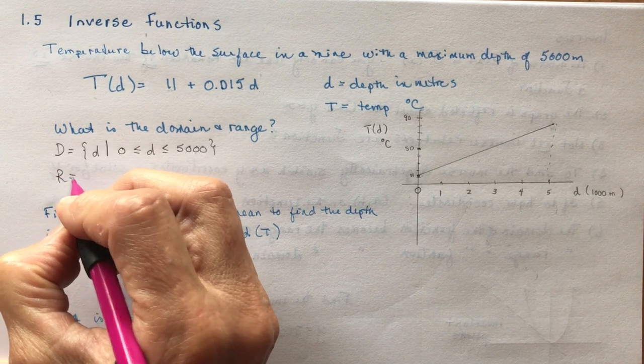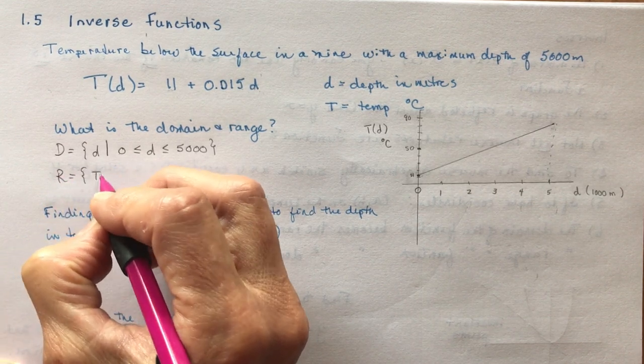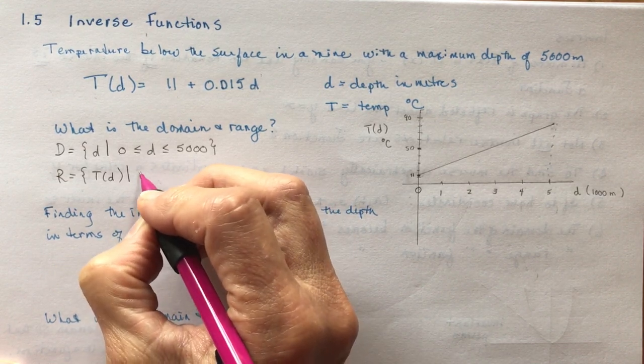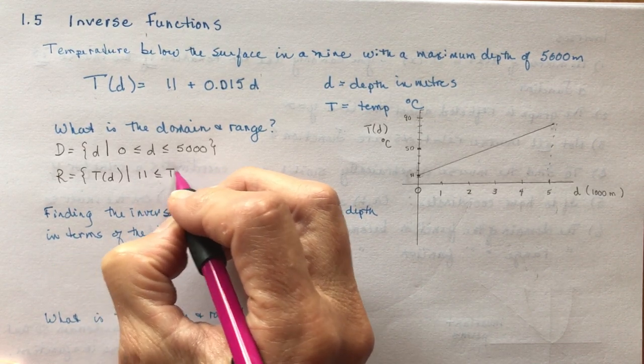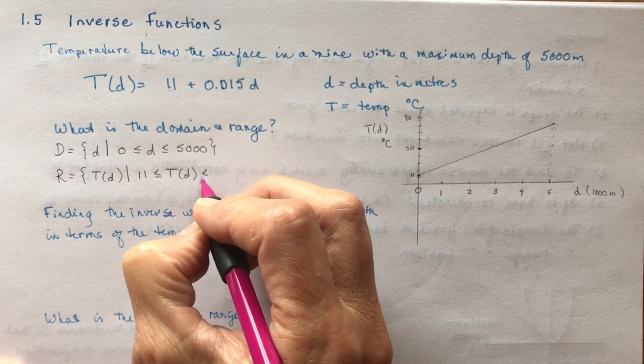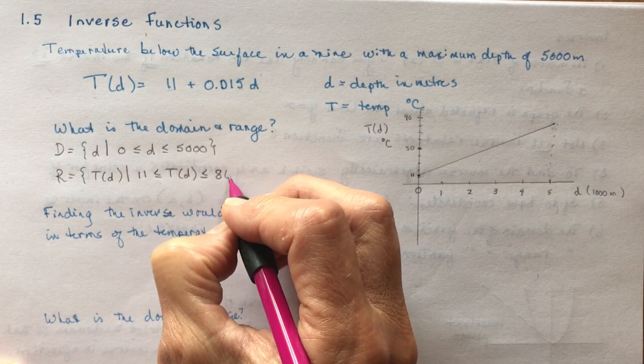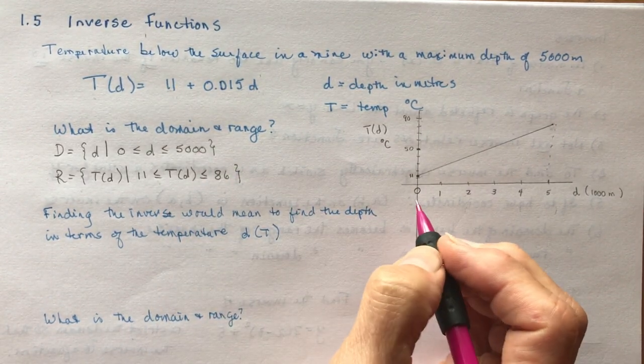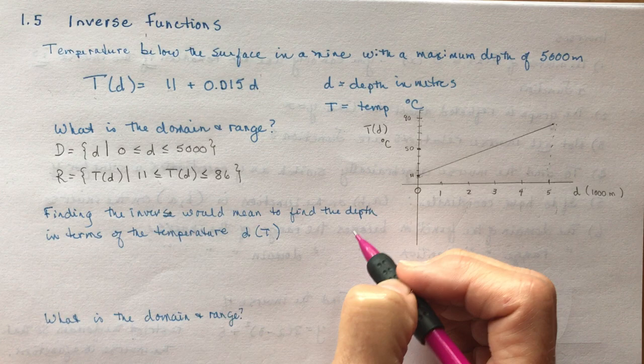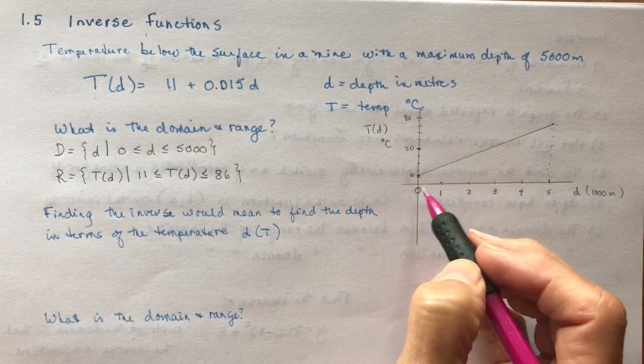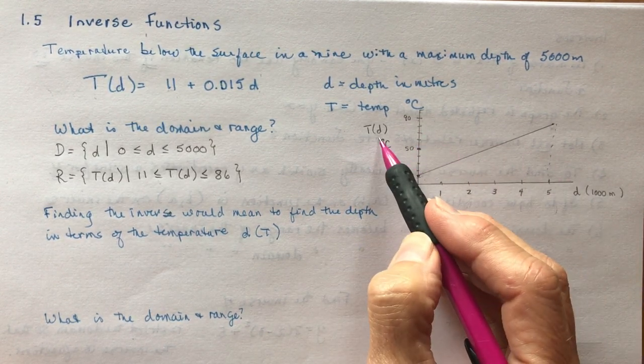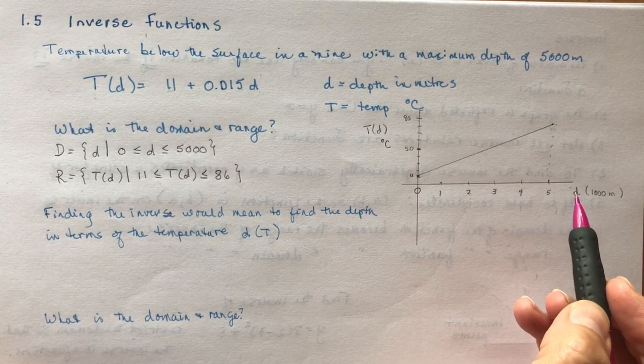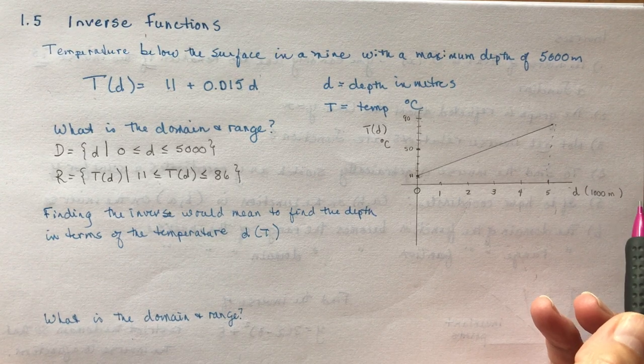So the range is going to be the temperature at time d such that we're going between 11 and 86 degrees when you're down at 5,000 meters. Finding the inverse of this would mean finding the depth in terms of the temperature. We would change our coordinates, having depth on this side and temperature here. If the temperature is 55 degrees, how deep am I in the mine? That would be what you're doing.